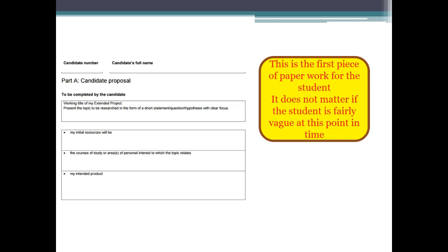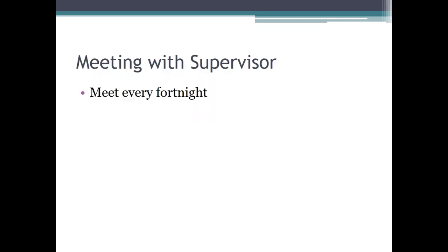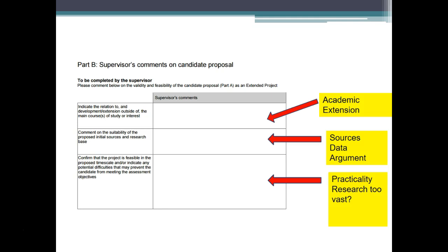This is what the first piece of paper looks like — the candidate proposal. Notice it says 'working title', then asks about initial resources, the course of study or areas of personal interest to which the topic relates, and your intended product. I don't think anyone here is doing an artifact — we're all going for the 5,000-word research paper. You fill this bit in and give it to your supervisor. They will then fill in Part B, where they have to show that it is outside the main course of study.